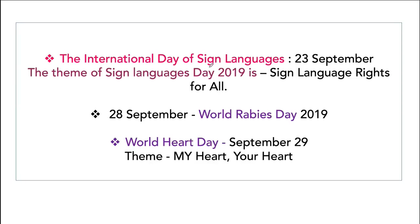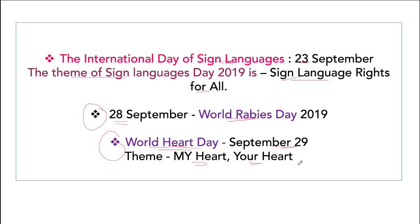International Day of Sign Languages is 23rd of September; this time the theme was 'Sign Language Rights for All.' 28th of September is World Rabies Day and World Heart Day is September 29th. World Heart Day and World Rabies Day are very important. The theme for World Heart Day is 'My Heart, Your Heart.'